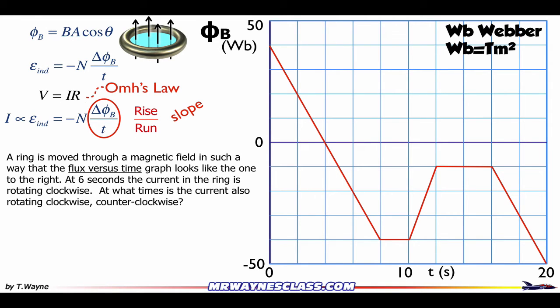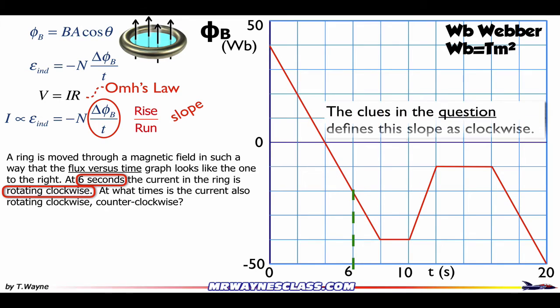Problem 1: A ring is moved through a magnetic field such that the flux versus time graph looks like the one to the right. At six seconds, the current in the ring is rotating clockwise. At what times is the current also rotating clockwise and counterclockwise? The clue is in the question — at six seconds it's clockwise. So I go to six seconds and see what kind of slope I have. In this case, I have a negative slope, so whenever I have a negative slope, it's rotating clockwise. That's just for this question — every question may have its own defining characteristic.